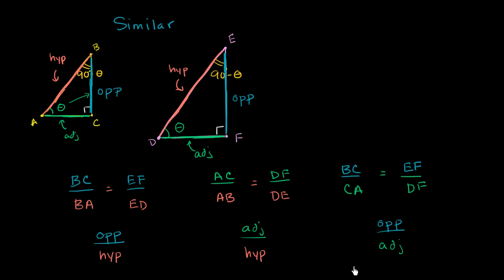I really want to stress the importance of this, and we're going to do many more examples to make this concrete. For any right triangle that has an angle theta, the ratio between its opposite side and its hypotenuse is going to be the same — that comes out of similar triangles. The ratio between the adjacent side and the hypotenuse is going to be the same for any triangle with angle theta. And the ratio between the opposite side and the adjacent side is always going to be the same. So mathematicians decided to give these things names.